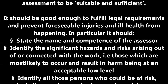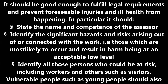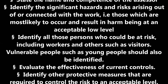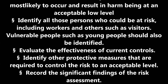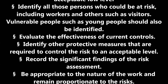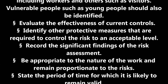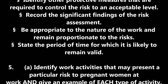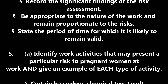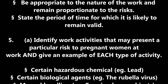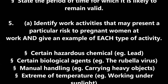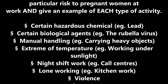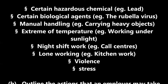Question 4: Outline the criteria which must be met for the assessment to be suitable and sufficient. It should be good enough to fulfil legal requirements and prevent foreseeable injuries and ill health. In particular it should: state the name and competence of the assessor; identify significant hazards and risks arising from the work; identify all persons who could be at risk, including workers, visitors and vulnerable people such as young persons; evaluate the effectiveness of current controls; identify other protective measures required; record the significant findings; be appropriate and proportionate to the risks; and state the period of time for which it is likely to remain valid.